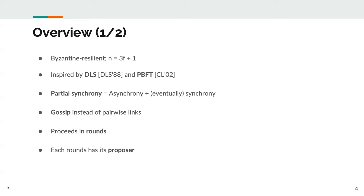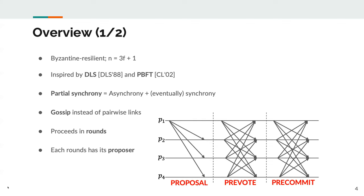Each round has its proposer, who is responsible to drive the system towards a decision. Once the system becomes synchronous and the proposer is correct, the proposer ensures that everyone decides. A round consists of three phases. First, the proposer broadcasts its proposal. Upon receiving a proposal, each process checks whether it can support the received value; if it can, it broadcasts a pre-vote message. Upon receiving 2F+1 pre-vote messages for the same value, the process broadcasts a pre-commit message. Once the process receives 2F+1 pre-commit messages for a value, it decides that value. The bit complexity per round is quadratic, as each sent message is of constant size.